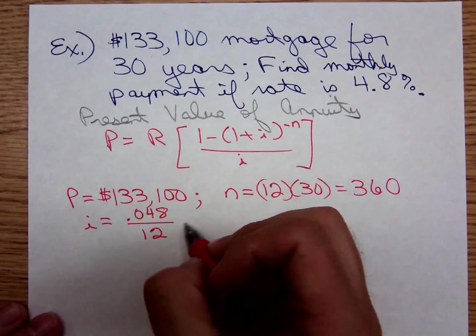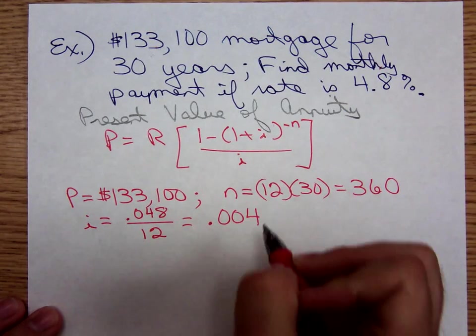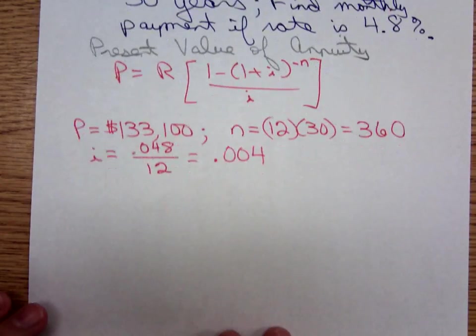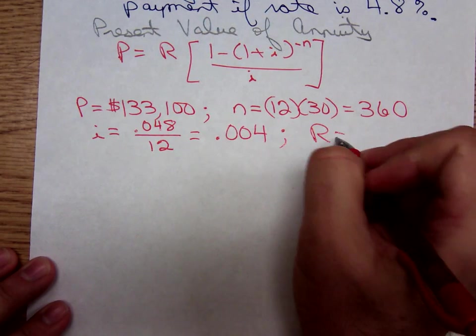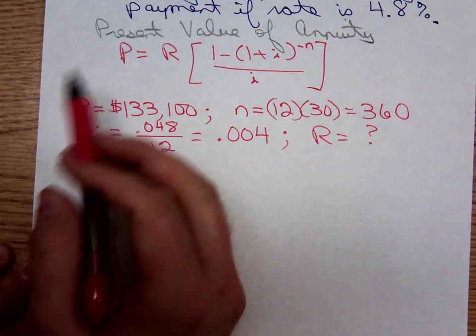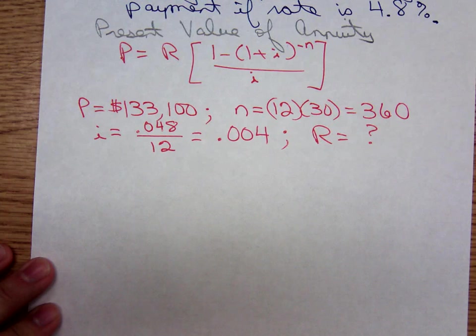Now plug it into the formula. Oh, and by the way, R is the unknown—that's the amount of the payment. That's what we're looking for. So plug it into the present value of an annuity formula.